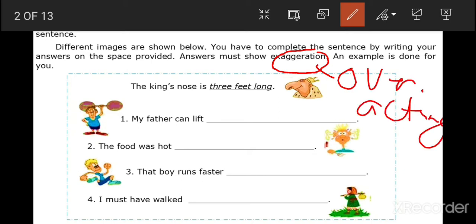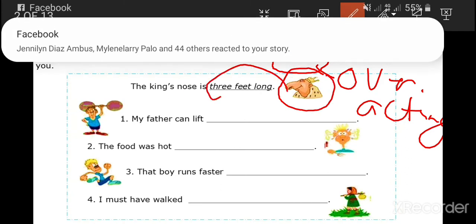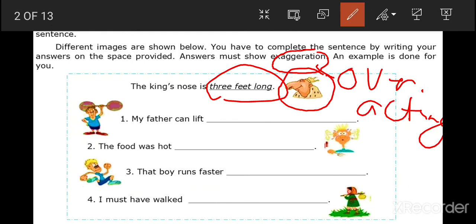For example, the king's nose is three feet long. Based from this picture, you can clearly see that the king's nose is three feet long. That is what you call a hyperbole. It shows exaggeration, it over acts something. Have you seen a person that has a nose that is three feet long? None. Nobody exists like that. So that is over acting.